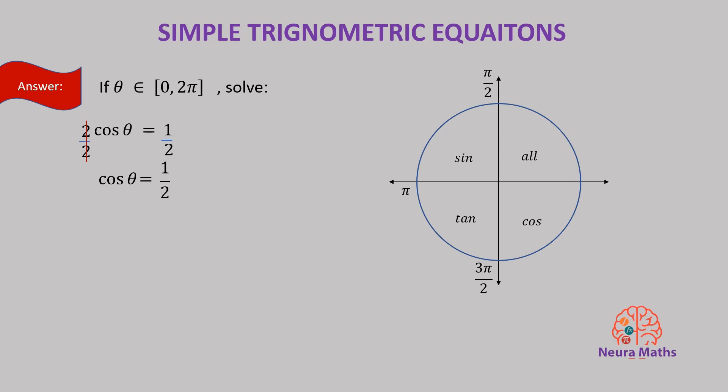Now to find theta without the calculator, let's ask ourselves a question. In which quadrants is cosine positive? The cosine function is positive in the first and fourth quadrant. So, angle theta exists in quadrant 1 and quadrant 4. What acute angle whose cosine is half? The acute angle whose cosine is half is 60 degrees.